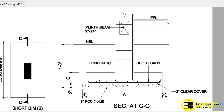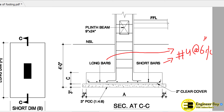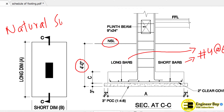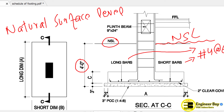Again, as you can see, we have these bars — short bars are number 4 at 6 inches center to center, and the long bars are the same in properties. Now as you can see, we have 4 feet — that is actually the height of the NSL. NSL means natural surface level — that is the natural ground. We always excavate below the natural surface level. So we have to do excavation up to 4 feet below the ground.